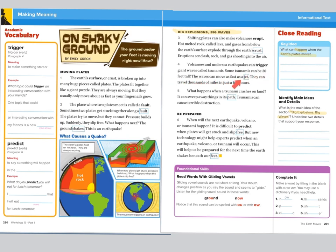"The waves can move as fast as a jet. They can travel thousands of miles in just a few hours. What happens when a tsunami crashes on land? It can sweep away things in its path. Tsunamis can cause terrible destruction." So as I'm looking at this paragraph, the first sentence talks about volcanoes erupting and the next talks about tsunamis — showing how both are affected by the earth's movement. I believe those will be my key details to underline for the main idea.